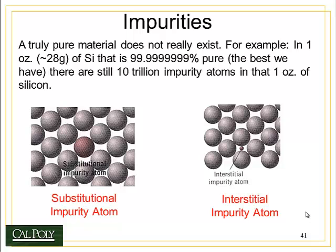We can also put impurity atoms in the interstitial sites. In this case, the interstitial atom has to be very, very small in order to occupy that small site. Substitutional impurity atoms are typically about the same size as the host atom, and interstitial atoms are much smaller than the host atoms.